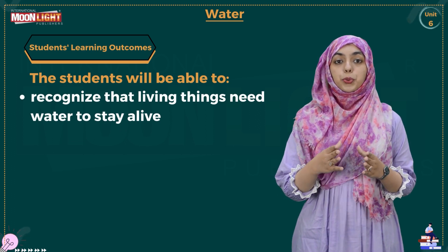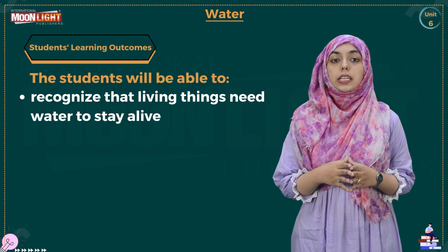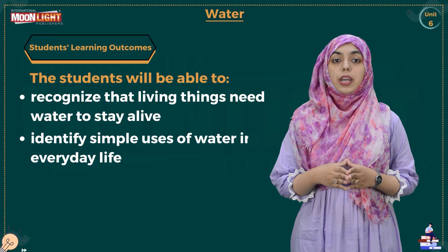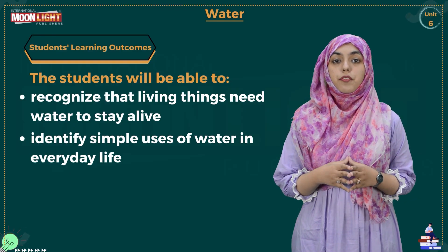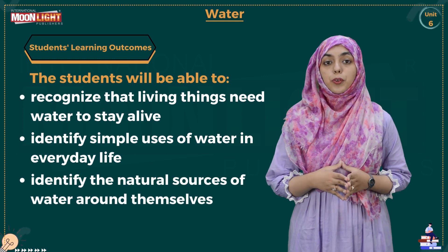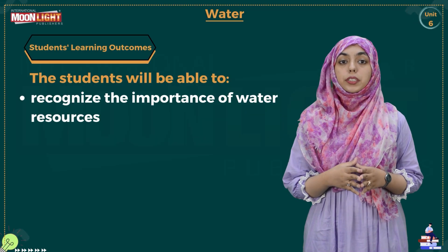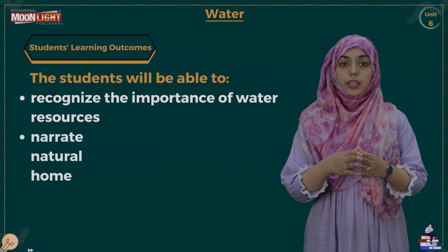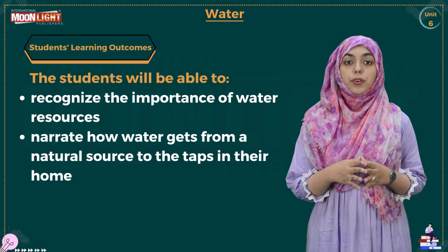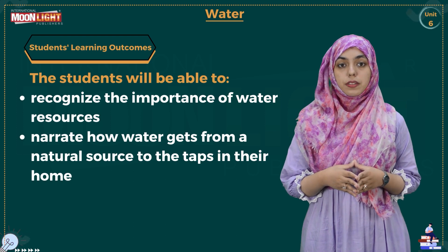After completing this chapter the student will be able to: number one, recognize that living things need water to stay alive; number two, identify simple uses of water in everyday life; number three, identify the natural resources of water around themselves; number four, recognize the importance of water resources; number five, narrate how water gets from natural resources to the tap in their homes.